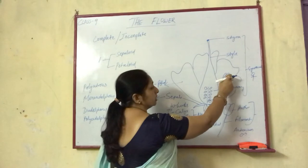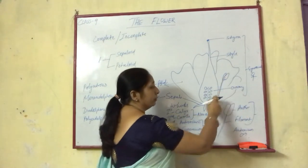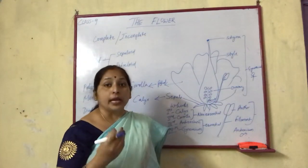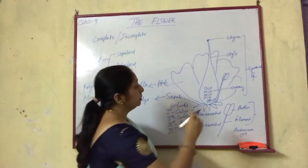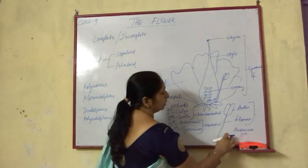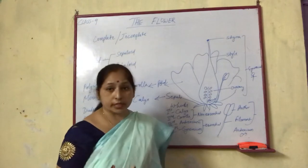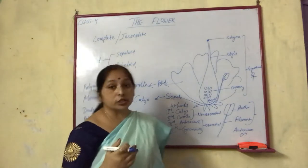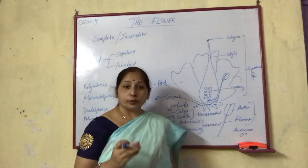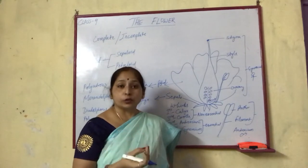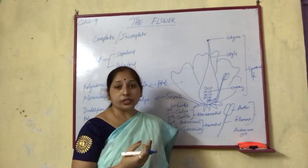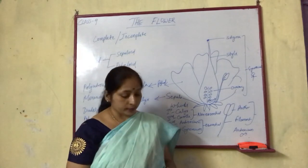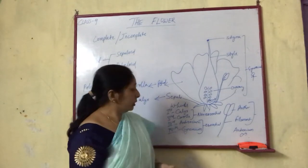The stigma, style, and ovary together constitute the female reproductive part, which is the gynoecium. The male reproductive part is the androecium, consisting of the anther and filament. Anther and filament together form the androecium, which is the male reproductive structure. Together, all four structures — calyx, corolla, gynoecium, and androecium — form the four floral whorls.